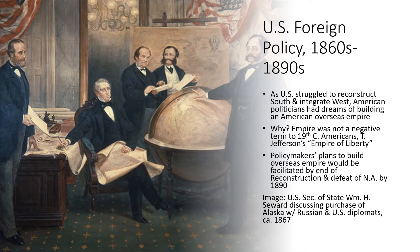We'll start with some background about US foreign policy in the 1860s through the 1890s. This is important because during this period, even more so than other periods of American history, US military personnel were involved in American diplomatic decisions and in US foreign policy, not just in warfare, but in diplomacy as well. As the US struggled to reconstruct the South and integrate the West, American politicians and in some cases military personnel had dreams of building an overseas empire for the United States of America.